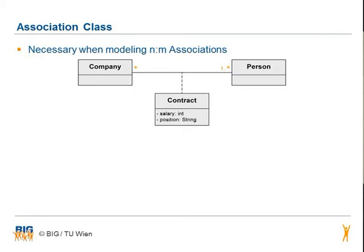An association class is often needed when modeling a many-to-many association. This is the case when on both sides of the relationship there is a multiplicity greater than one. A company can have one or more relationships to a person, and a person can have zero or more relationships to a company.